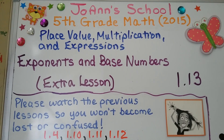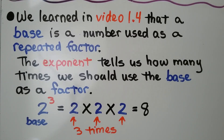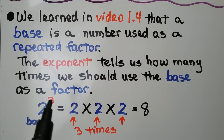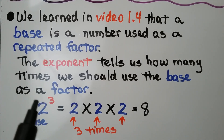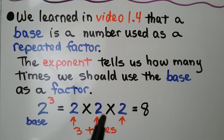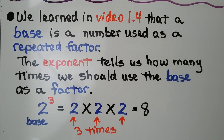This is extra lesson 1.13, about exponents and base numbers. We learned in video 1.4 that a base is a number used as a repeated factor. The exponent tells us how many times we should use the base as a factor. So the 2 is the base and the 3 is the exponent — this tells us to multiply 2 times 2 times 2, three times. 2 times 2 is 4, times 2 is 8. So 2 to the third power is equal to 8.